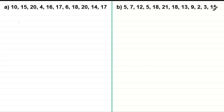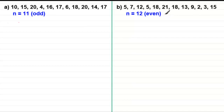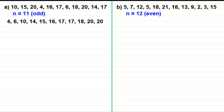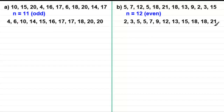I've got two sets of discrete data here. In this first set, I've picked 11 observations — these could be, for instance, the temperature during 11 days. And in this list, I've got 12 observations — these could be the marks given to 12 students in a test. You'll notice I've picked an odd set of observations and an even set of observations. Before we can find the median or quartiles, we need to arrange the data in order of size, which I've already done for both sets.